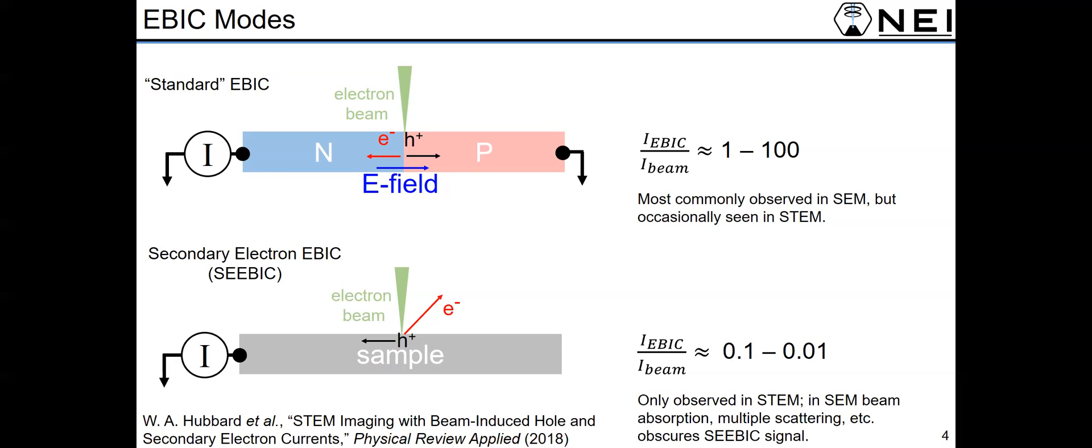So this much smaller signal is typically only observed in STEM, in part because it requires much more sensitive electronics, but also because in the SEM you have a lot more beam interaction going on.